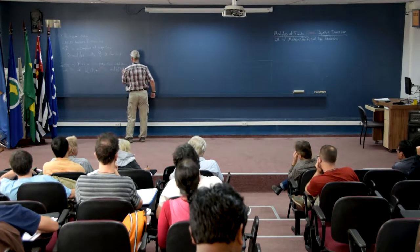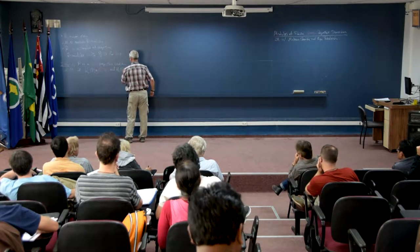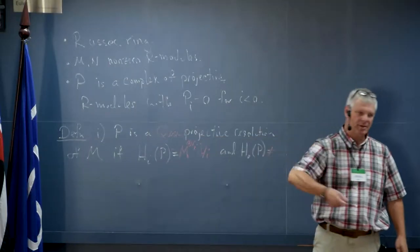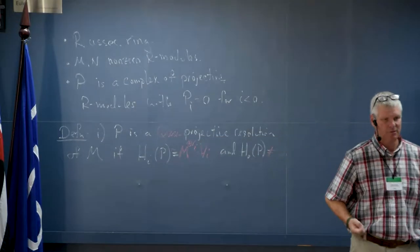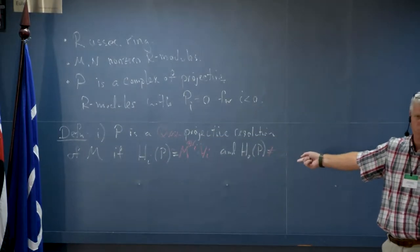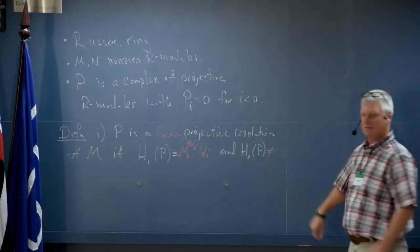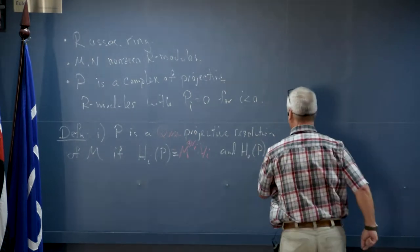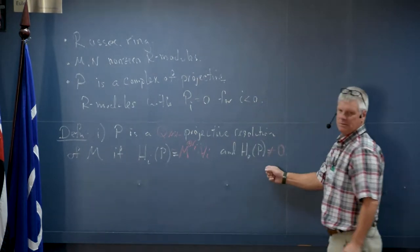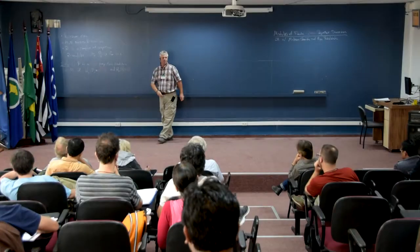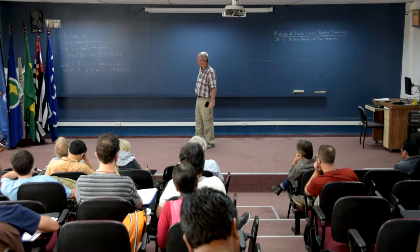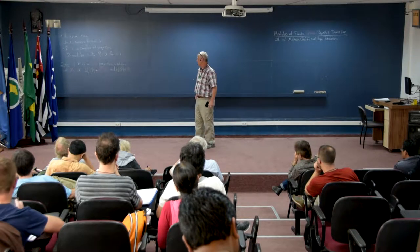I just want the homology of the complex to be direct sums of copies of the module, and I just want to make sure that the zeroth homology is non-zero — so there is some homology there. This is what I'm going to call a quasi-projective resolution of M.